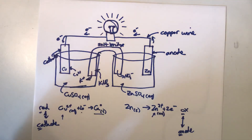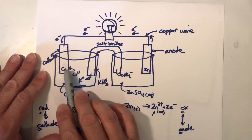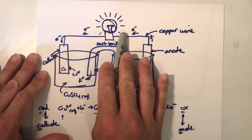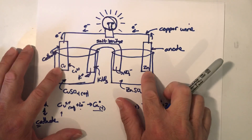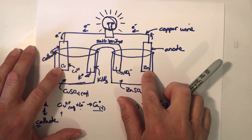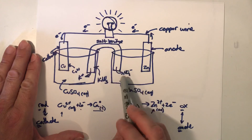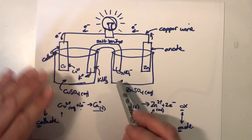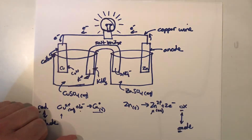In the next lesson we'll learn how to predict which metal strip is the cathode and which is the anode. For now, we need to know that if we're given a direction of electron flow or the half-reactions, we can properly label the cathode and anode, figure out which direction the electrons are going, and determine which direction ions are coming out of the salt bridge.